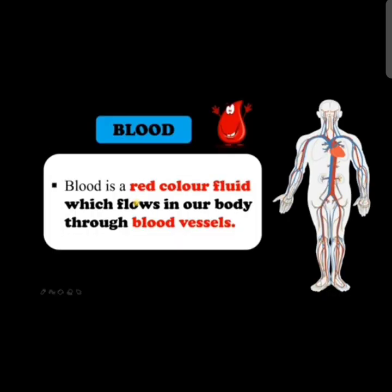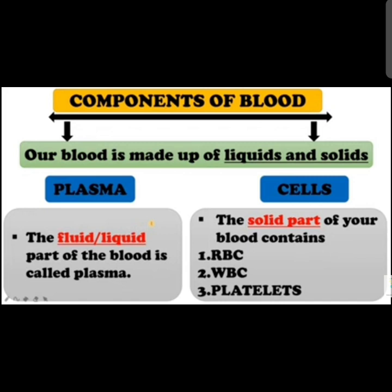The first part of the circulatory system is blood. Blood is a red-colored fluid which flows through blood vessels to every part of the body. An average adult person has five to six liters of blood. Blood transports digested food from the small intestine to all cells, oxygen from the lungs to body cells, carbon dioxide from cells to the lungs, and waste products for removal.